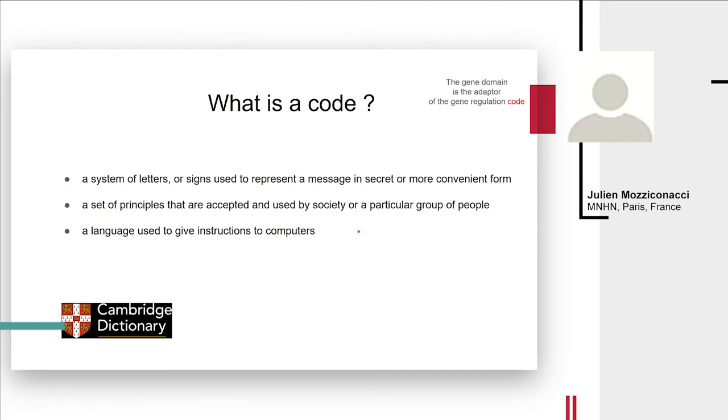I'm going to start with the word code, which is very often used in biology but not very often defined. So if we go to the Cambridge dictionary and look for the word code, here are three definitions we can get. The first is a system of letters or signs used to represent a message in a secret or more convenient form, so a secret code. The second is a set of principles accepted by society or a particular group of people, like a moral code. And the third one, a language used to give instructions to computer.